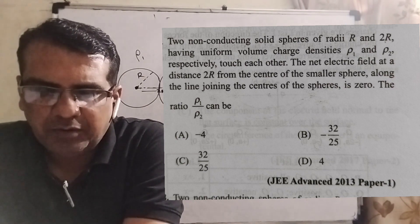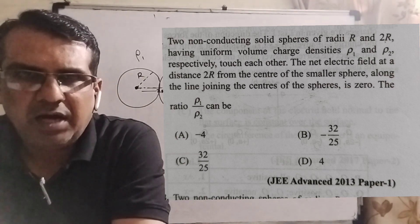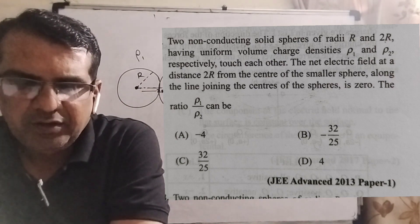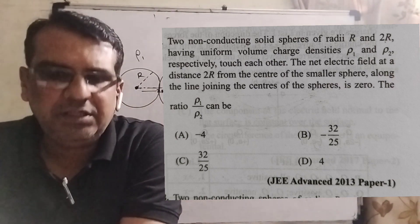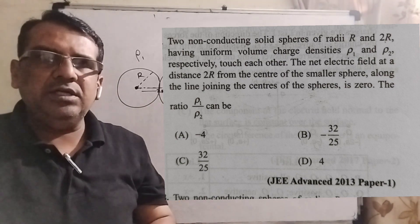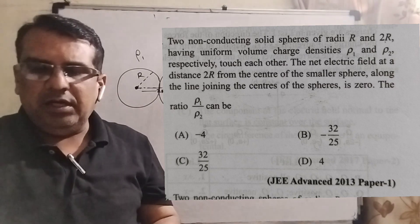The ratio of rho 1 and rho 2 can be. Here you have given 4 options. First option A is minus 4, option B minus 32 by 25, option C 32 by 25 and option D is 4. This question is asked JEE Advanced 2013 paper first.